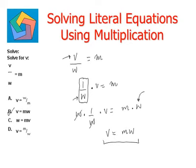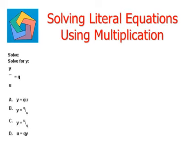Let's make it easier in the upcoming examples. Solve for Y, and we are given the equation Y divided by U equals Q. Now here the coefficient is 1 over U times Y equals Q.